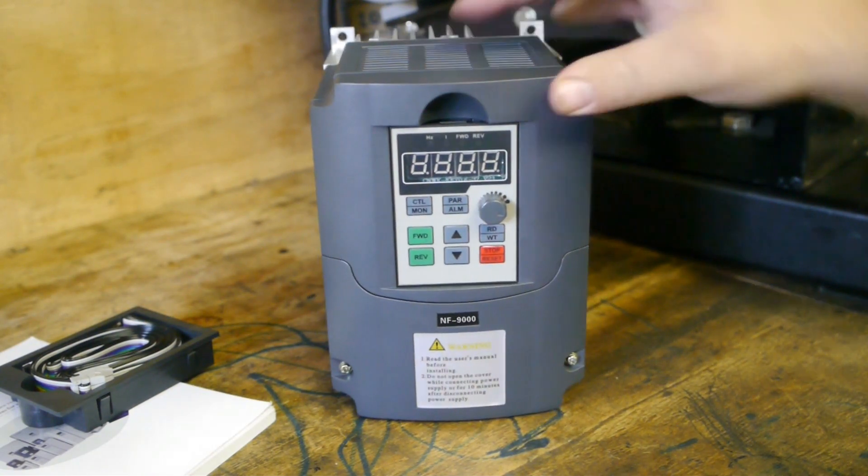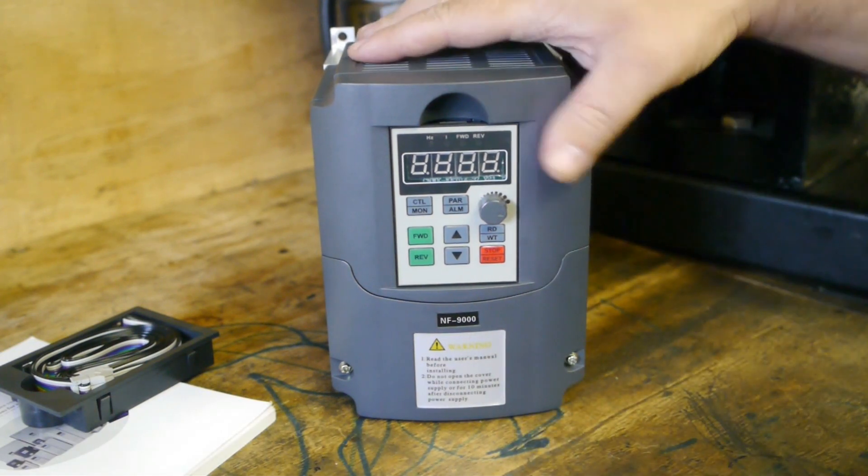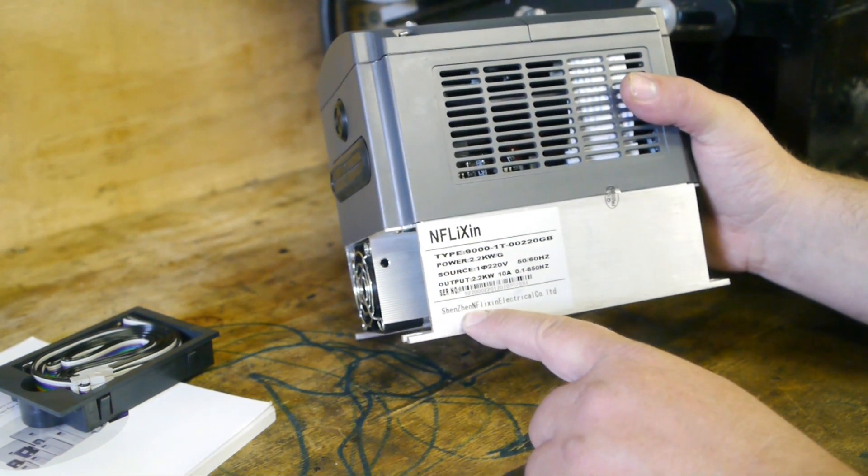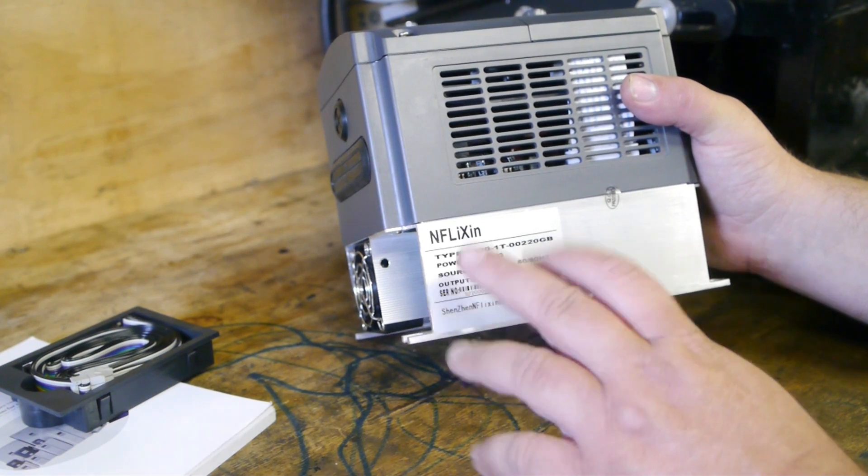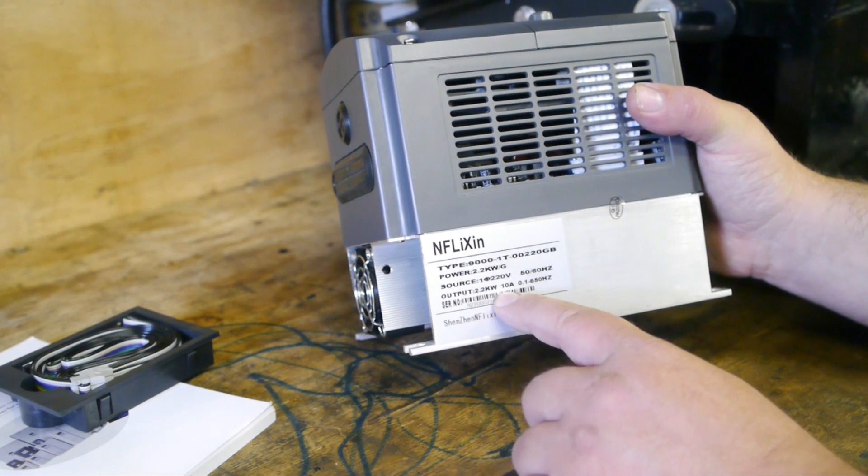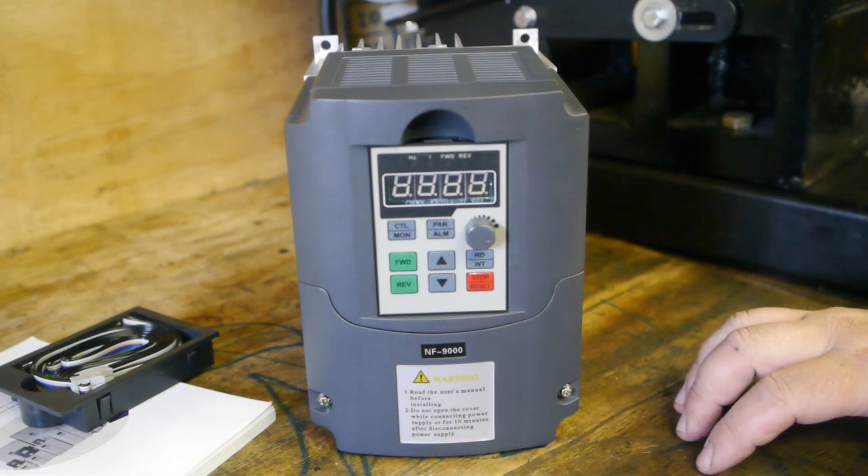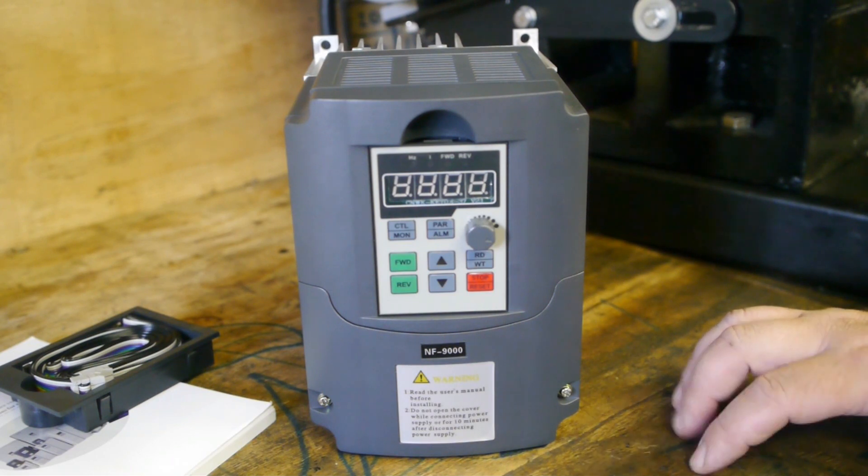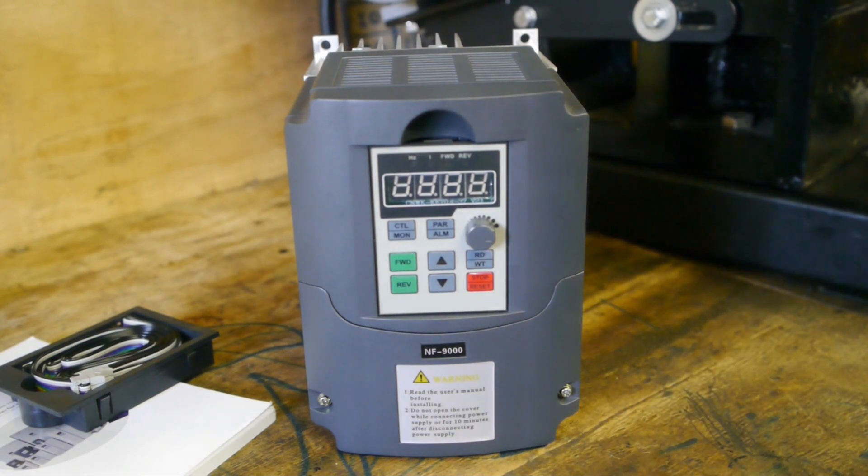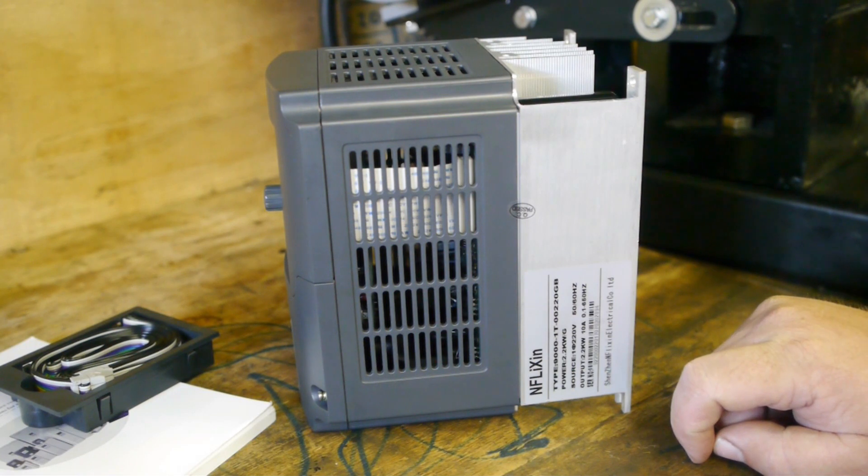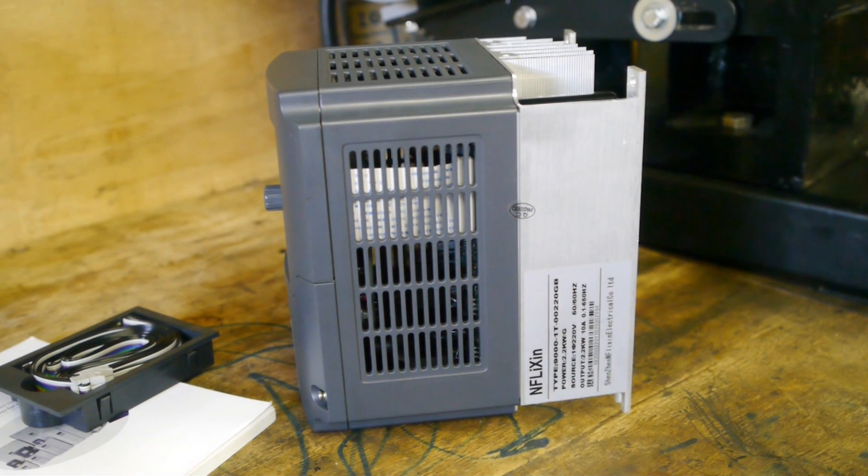So here it is, my new VFD drive. It's the NF9000 made by a company called NF Flixen, the Shenzhen NF Flixen Electrical Co Ltd. It's a 2.2 kilowatt single-phase unit. The 9000 series goes from 0.75 kilowatt up to 400 kilowatt and that includes both single-phase and three-phase models. NF Flixen has an internet site if you can read Chinese. They also have an English version of their website, but that's more entertainment than informational.